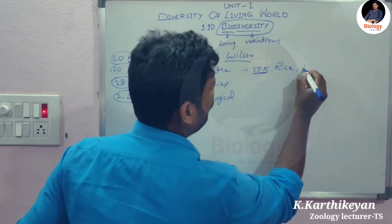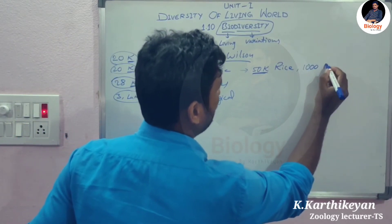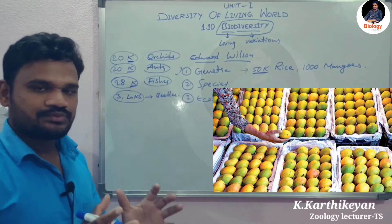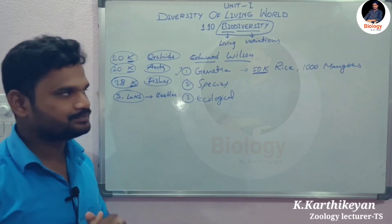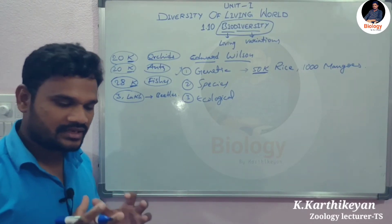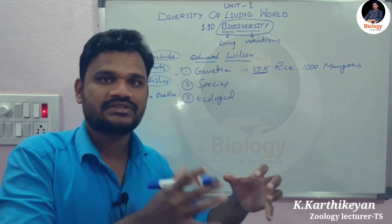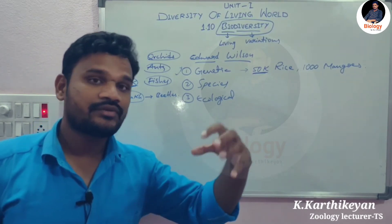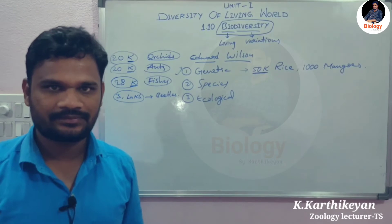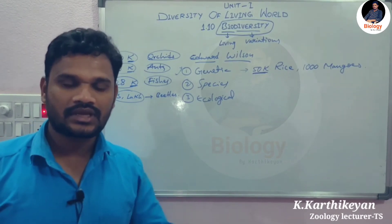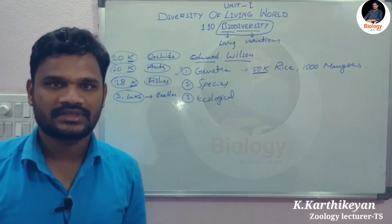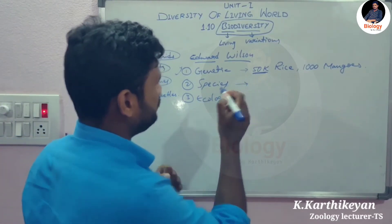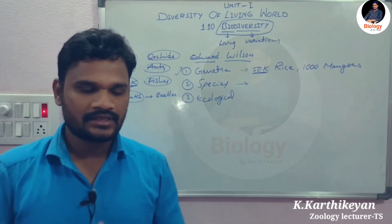In India there are also 1,000 varieties of mangoes. Rice is a single species and mango is a single species, yet within each single species there are many variations in genes — 50,000 types in rice and 1,000 types in mango. This is genetic biodiversity.